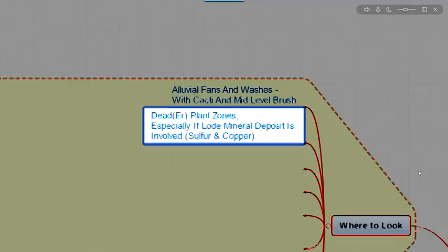You're looking at dead or plant zones. As we talked about earlier where they're dying off. So especially if there's lode mineral deposits nearby with sulfur and copper. That's going to kill off any plants right near the lode itself. That's an important clue.